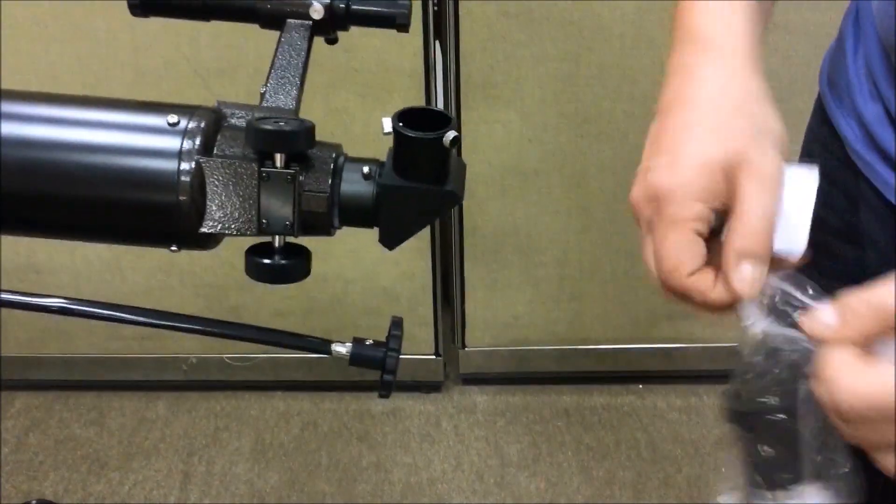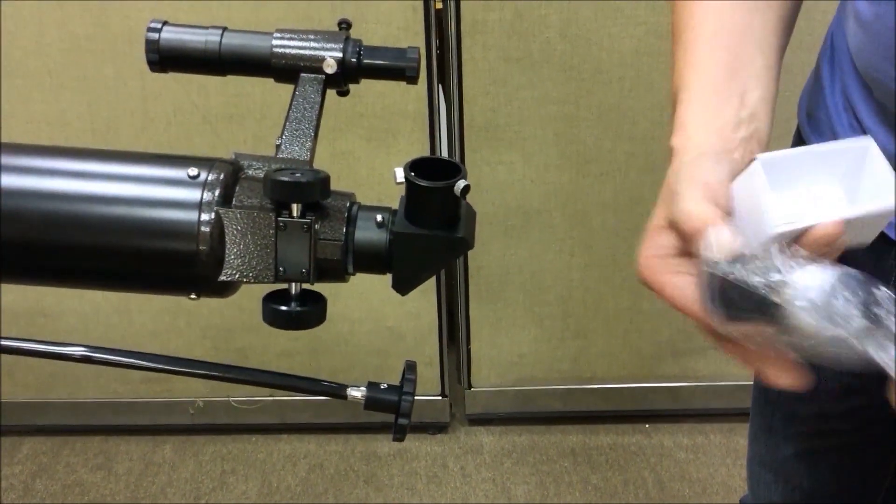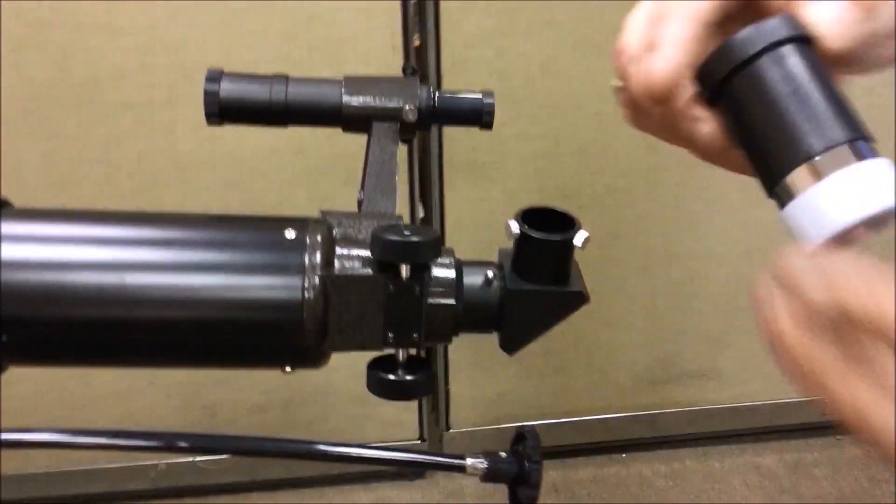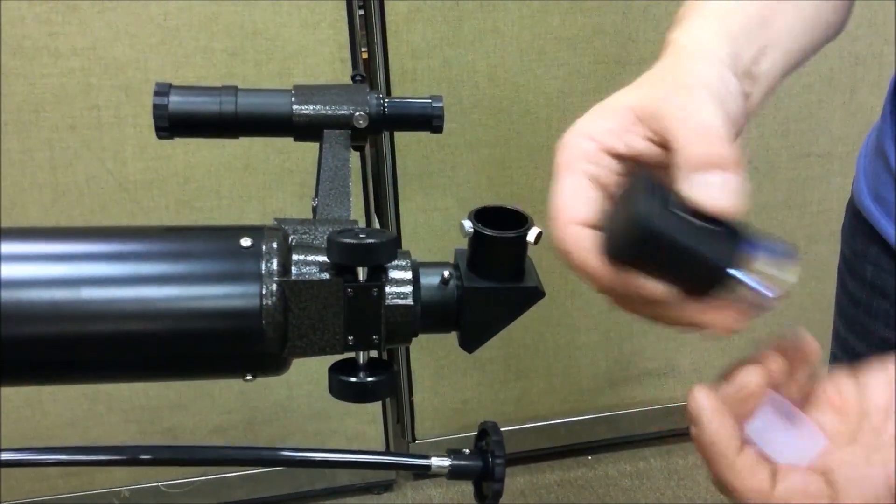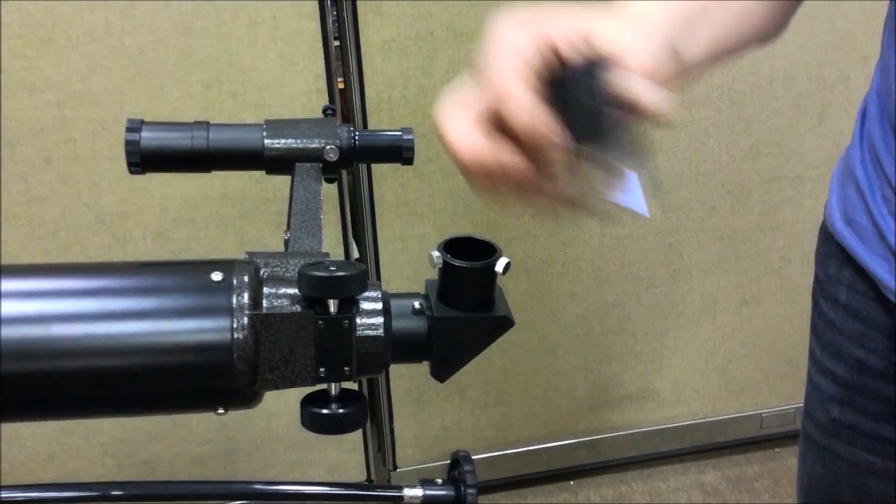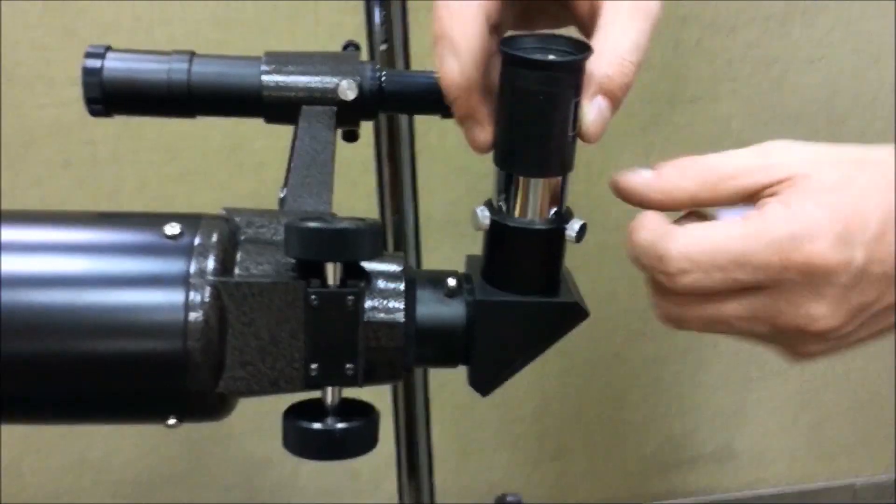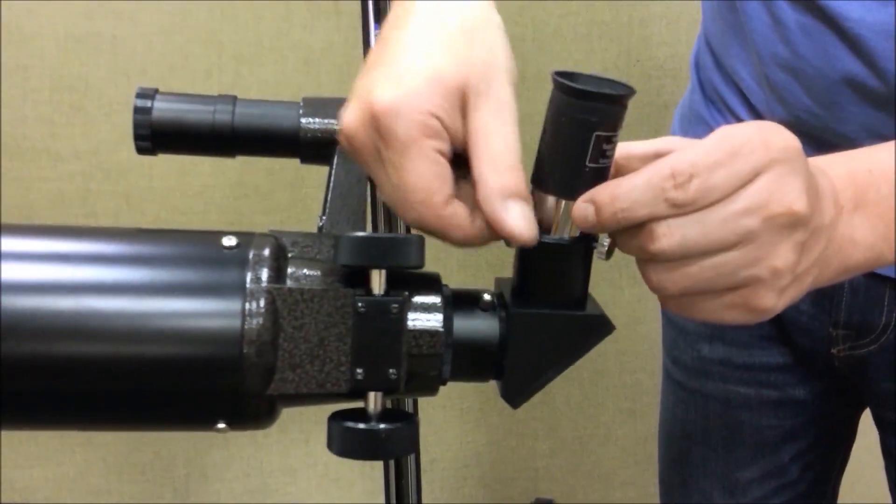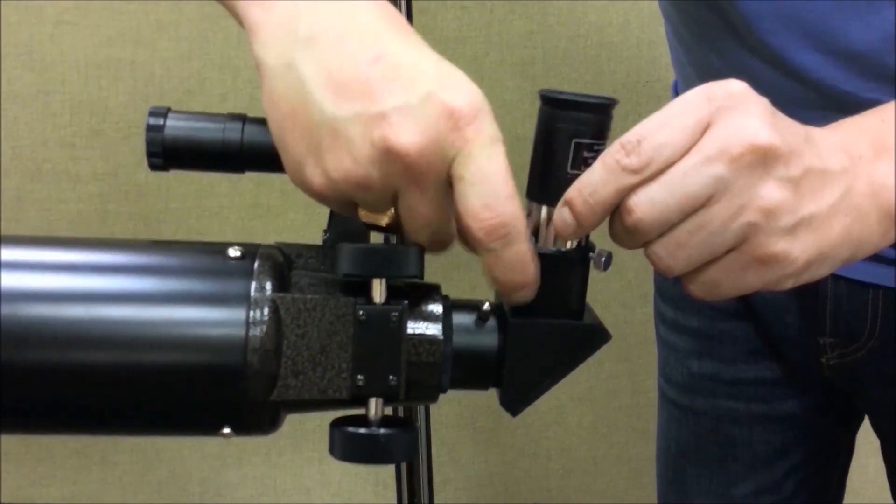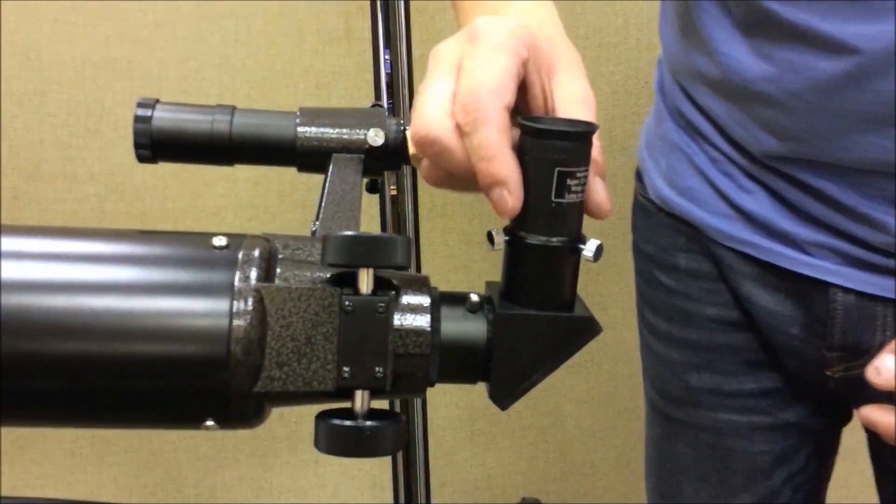Now we take the eyepiece and remove the protective caps. Loosen the locking screws and insert the eyepiece into the diagonal mirror. Now tighten the screws.